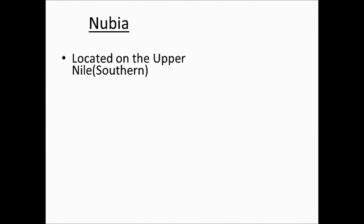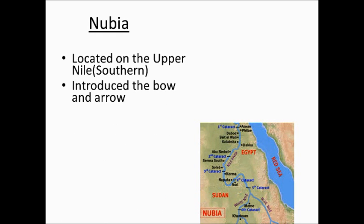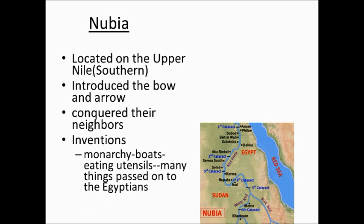We're going to talk about Nubia — a kingdom located on the Upper Nile. Just like the Shenandoah River, the Nile flows north, so the Upper Nile was actually the southern part of the Nile River Valley. Egypt was to the north and Nubia down to the south. They did some really cool stuff: they introduced the bow and arrow, conquered many neighboring kingdoms, and had many inventions we thought the Egyptians came up with first — but now we know it was actually the Nubians.